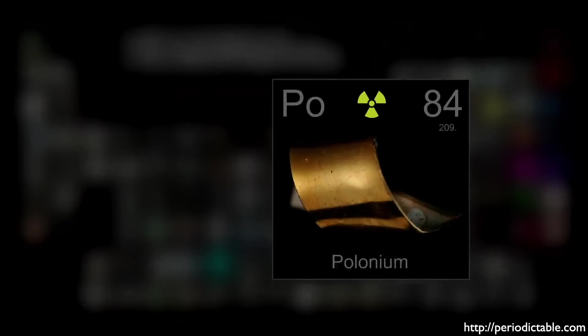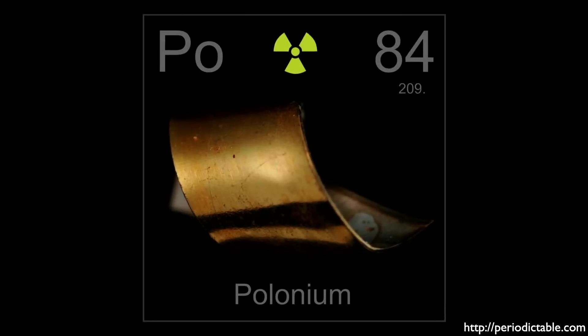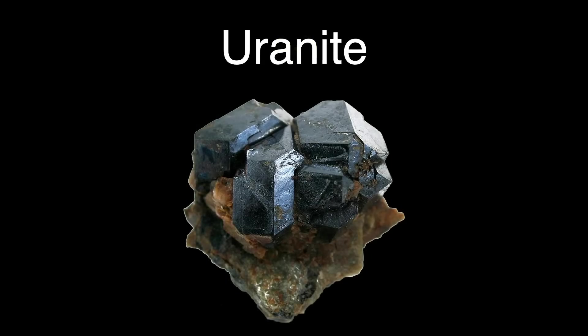Polonium is the 84th element in the periodic table. Its atomic number is 84 because that's how many protons are in its nucleus, and that is what distinguishes it as a unique element. Because all polonium isotopes are short-lived, more on this in a bit,